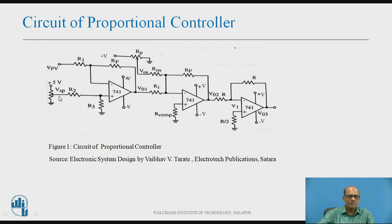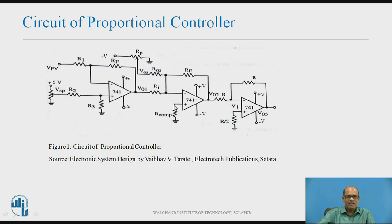phi_SP is the set point voltage; the set point of the process is set by varying this potentiometer. One end of this potentiometer is connected to phi volts and one end is connected to ground, as shown in the figure. This first operational amplifier will act as an error amplifier — that is, the difference between phi_SP and phi_PV. So the output voltage equals the error voltage: phi_SP minus phi_PV for this first stage. The second stage is an inverting summing amplifier which acts as a proportional controller, and the last stage is an inverting amplifier with a gain of minus 1.